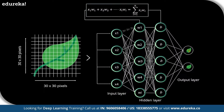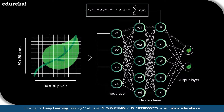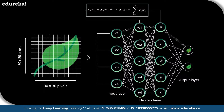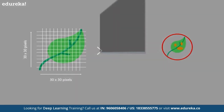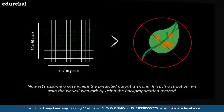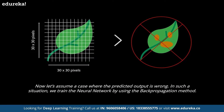Each perceptron is passed through an activation function — also known as a transformation function — that determines whether a particular perceptron gets activated or not. An activated perceptron is used to transmit data to the next layer. In this manner, the data is propagated forward through the neural network until the perceptrons reach the output layer. At the output layer, a probability is derived which decides whether the data belongs to class A or class B.